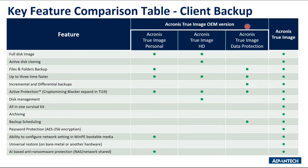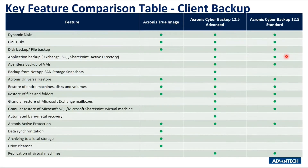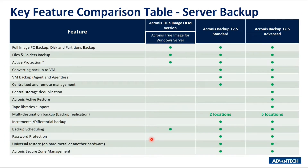This slide shows a comparison of key features available in the OEM version. With Acronix True Image, we now support entire PC backup with both Acronix True Image Personal and Acronix True Image HD OEM solutions. The next slide shows the comparison between Acronix True Image and Acronix Cyber Backup — Cyber Backup has more backup features available, while True Image has data synchronization features. The server backup key features comparison shows that people usually get the Backup Advanced version when they want to cater for more locations.